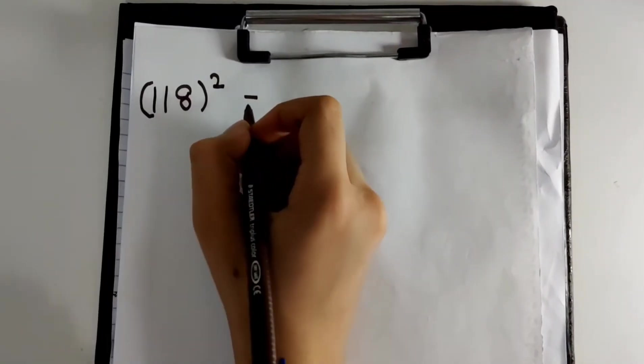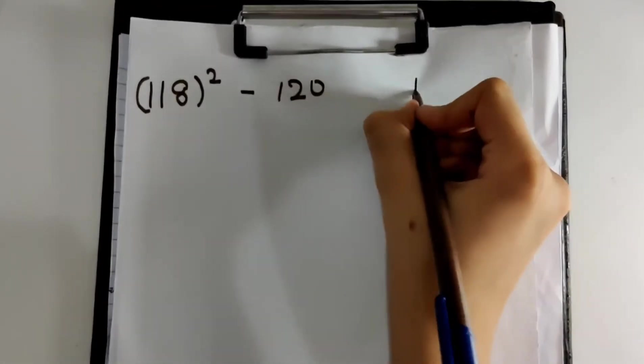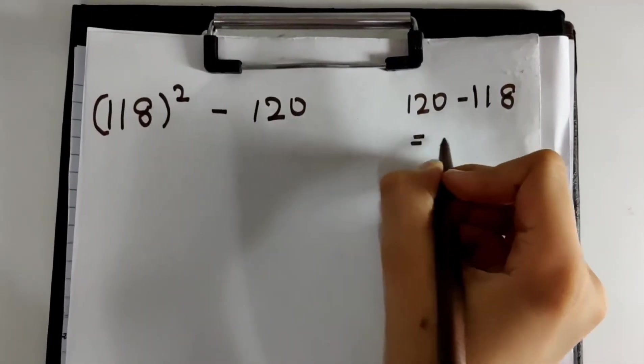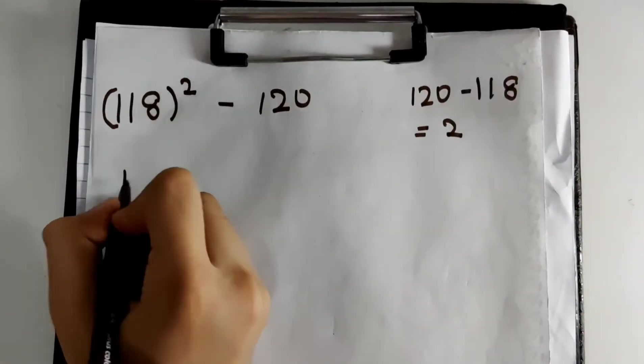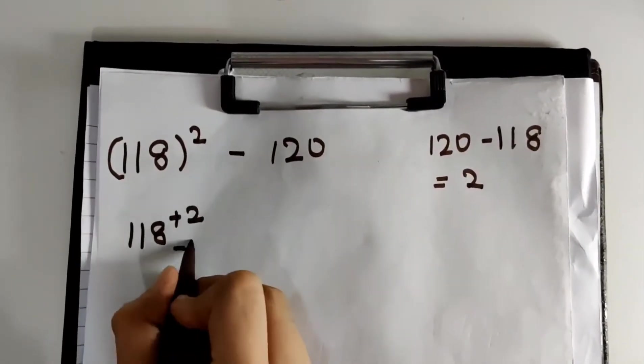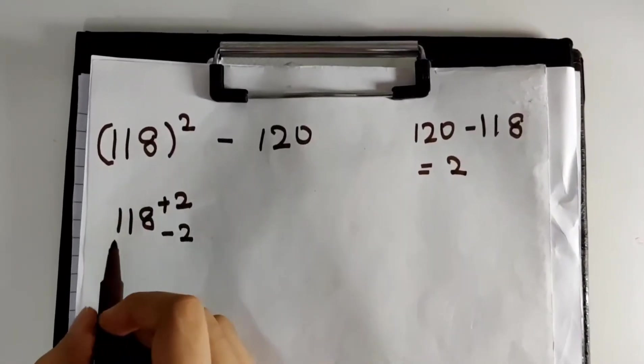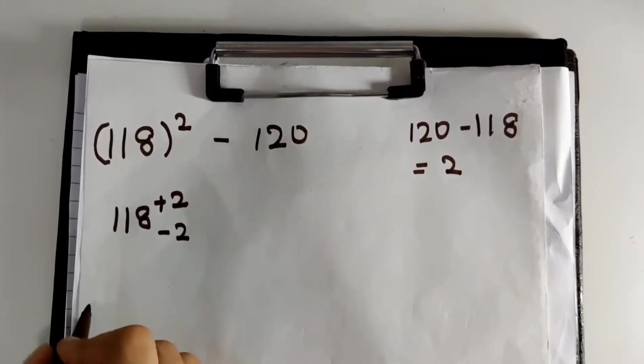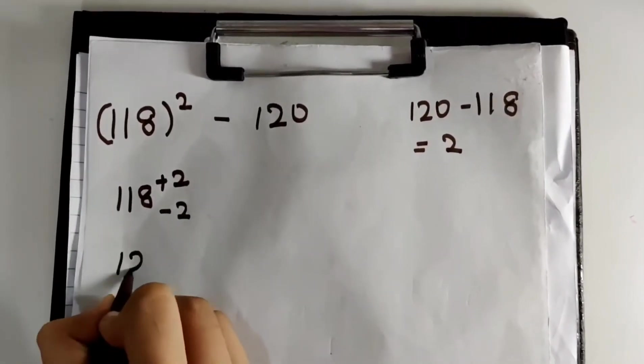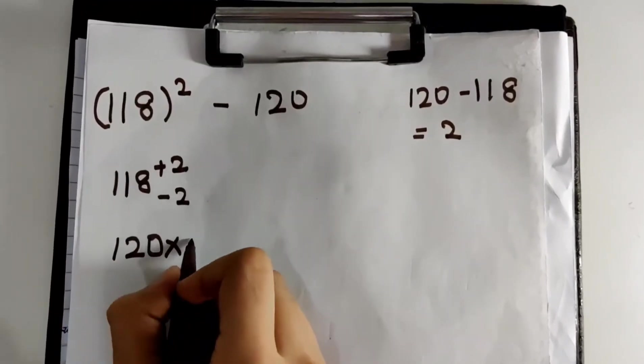Let us solve this by taking the round of number as 120. 120 minus 118 is nothing but 2. I will write a plus 2 here. The additive inverse of plus 2 is minus 2. Now what I have to do is add 118 with plus 2 and minus 2, then multiply them together. 118 plus 2 is 120 multiplied with 118 minus 2, that is 116.